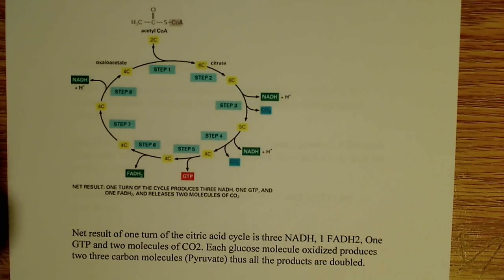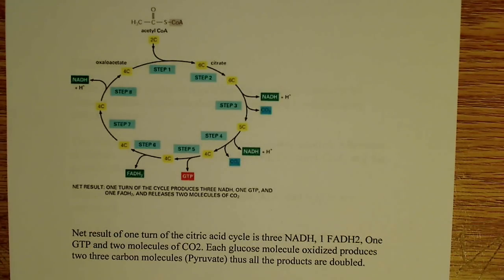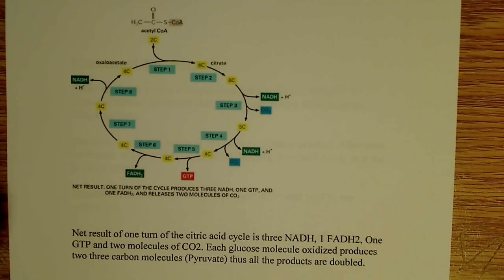In step six, we have the formation of fumarate and FADH2. This is another important reaction because we're producing FADH2. These reduced electron acceptors — NADH and FADH2 — are extremely important for oxidative phosphorylation. These molecules donate their electrons to the electron transport chain, and they are one of the reasons it's able to pump protons and produce the proton gradient that eventually leads to high amounts of ATP production. In the formation of fumarate, succinate — a four-carbon molecule — reduces FAD+ to FADH2, and we form fumarate, still a four-carbon molecule, through an enzyme known as succinate dehydrogenase.